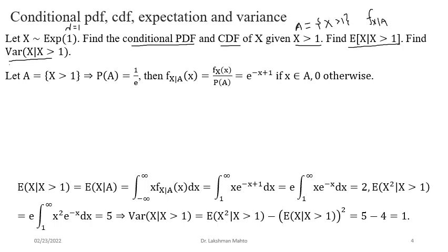To find the conditional PDF of X given A, if we are taking X from event A itself, it is just the ratio of the marginal PDF of X divided by the probability of observing A. We can easily find P(A) by integrating the density from 1 to infinity. The exponential density function is λ·e^(−λx) multiplied by the unit step function.